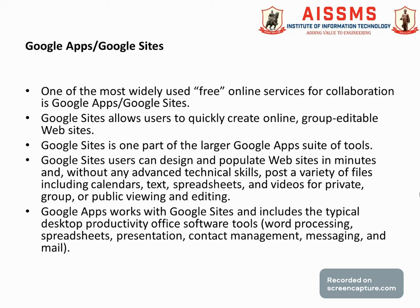Google Sites allows users to post a variety of files including calendars, text, spreadsheets, and videos for a private group or public viewing and editing. For example, if you want to share an account sheet with a group in the accounting section, the person can share that spreadsheet only with members of that accounting group, assigning access options such as view or edit, and designating the owner of that spreadsheet.